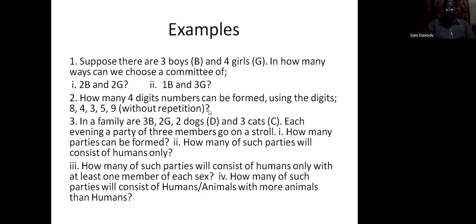Question three. In this family, there are 3 boys, 2 girls, and 3 cats. And then, you want a party of three being formed? Well, it will be a 10 choose 3 situation for the cardinality of the sample space. Then, how many parties can be formed? That's 10 choose 3. How many parties will consist of humans only? For humans only, there are 5 humans in there, so it's 5 choose 3 for humans only.